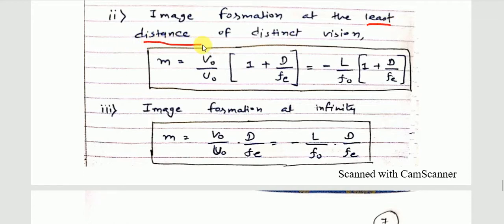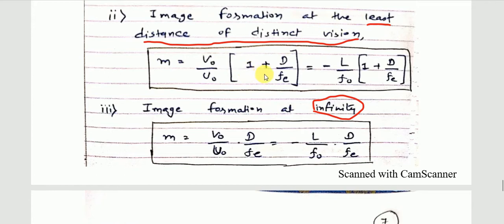Again, you can see two different formulas, just like for the simple microscope — I am underlining the key words. In the case of distinct vision: m = (vo/uo) × (1 + D/fe). For infinity, the '1 plus' does not come, so it becomes m = (L/fo) × (D/fe). We proved the relation of vo/uo in the derivation. Recall these formulas well for compound microscope.